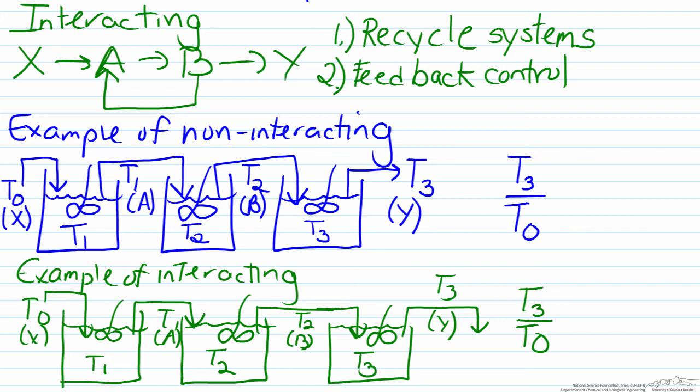we can take a look at the same non-interacting system that we just developed. However, by making one modification to our diagram here, we can change the system from being non-interacting to interacting. As an example, and to be consistent with what we discussed for interacting processes above, the fluid in the second tank could be recycled back to the first tank.